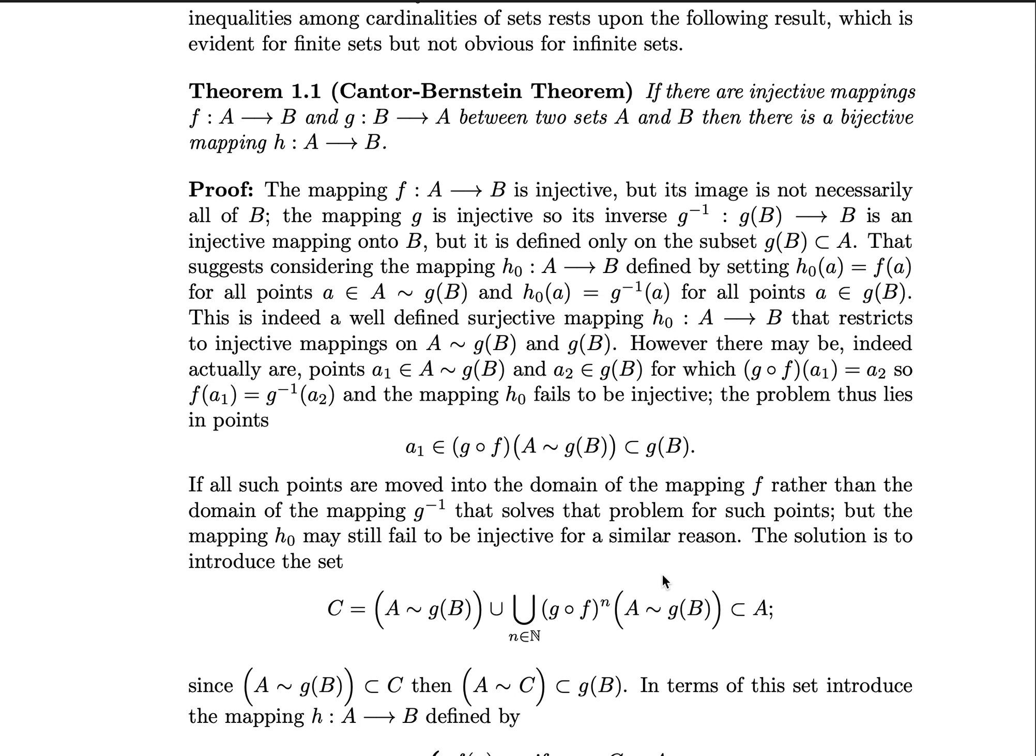And if an element a is in the image of B under g, then we set h₀(a) equal to the inverse image of a under g. This is a well-defined surjective mapping. h₀ will clearly cover all of B that restricts to injective mappings on A excluding g(B) and g(B) itself. However, there usually are,